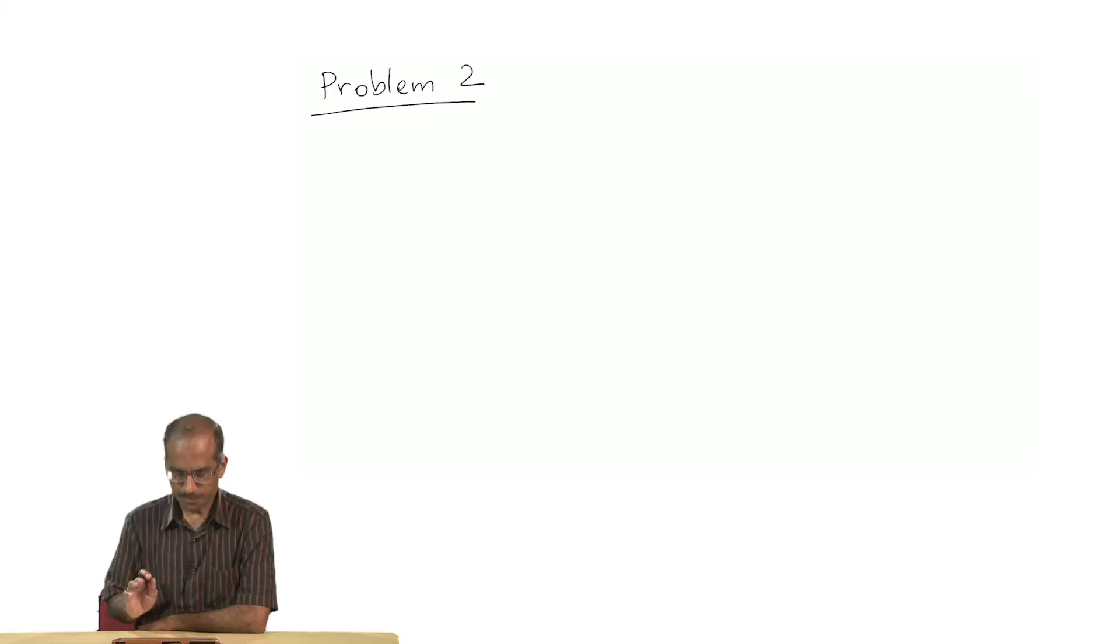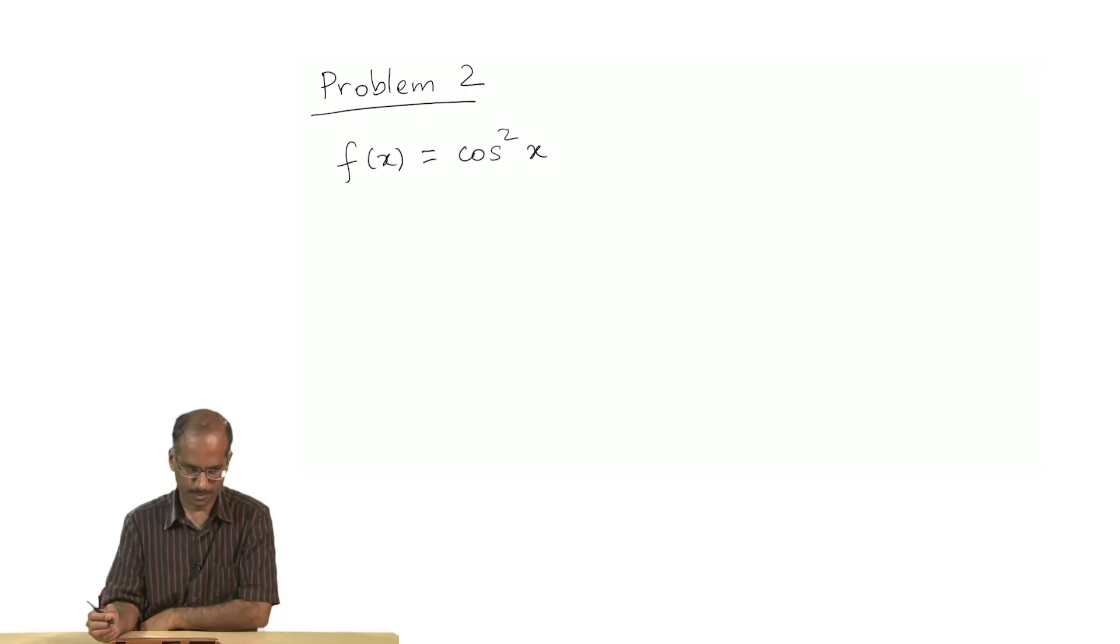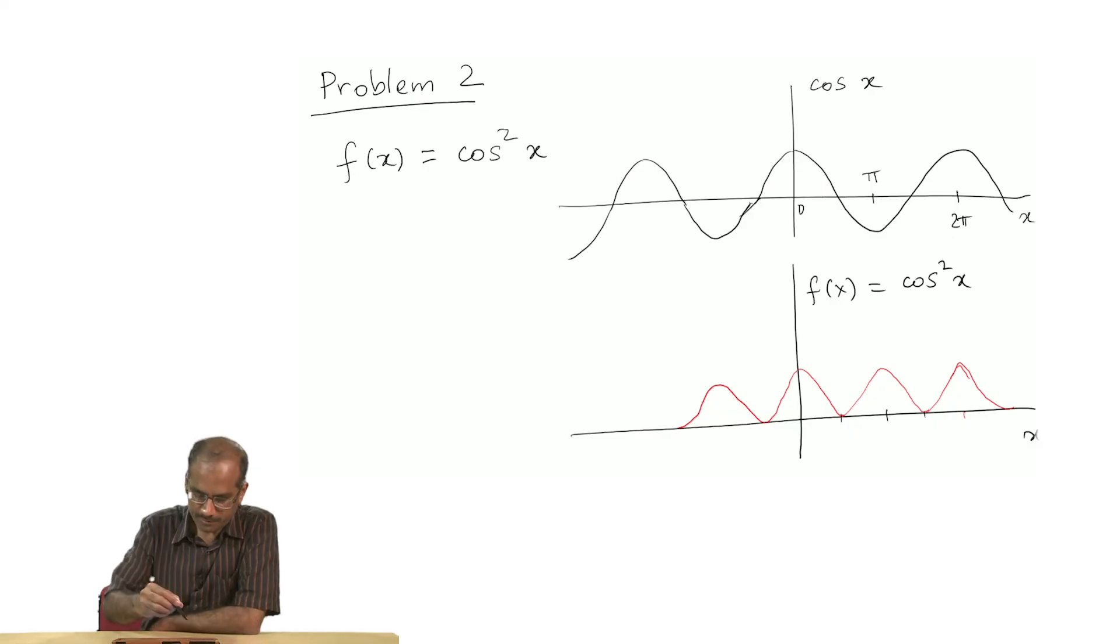The next problem is a problem where the function is defined only within a certain region. Here the function is f of x is cos²x and we have to find its Fourier representation. Let us first plot this function.